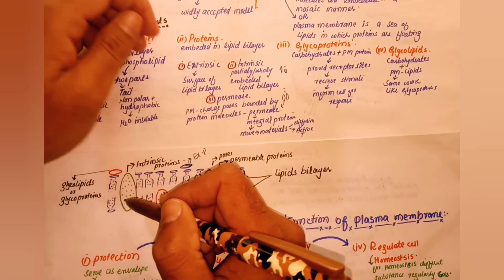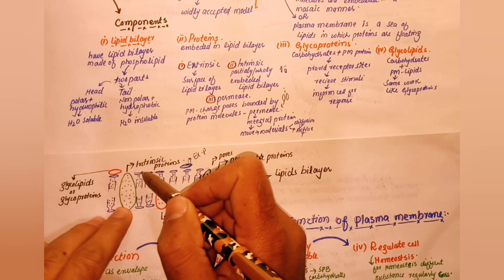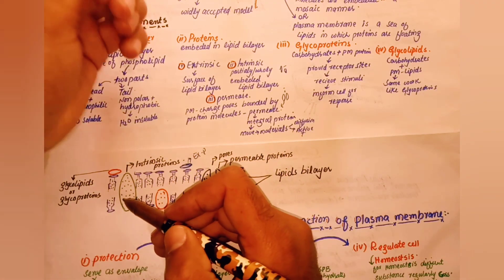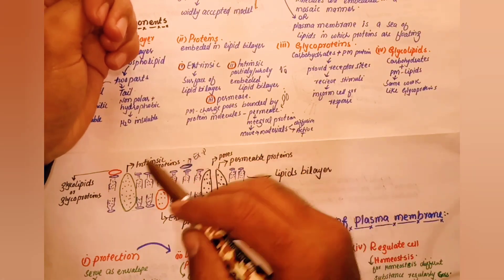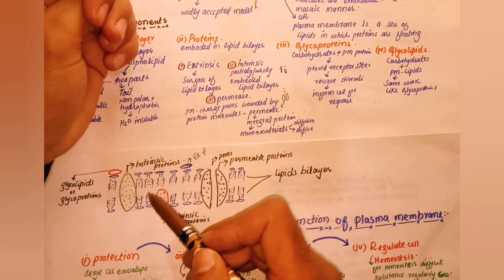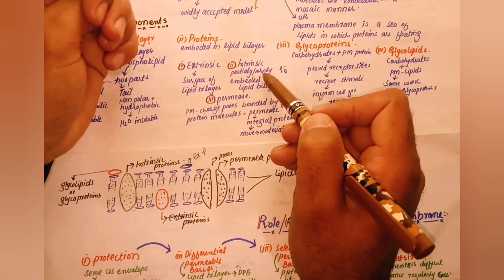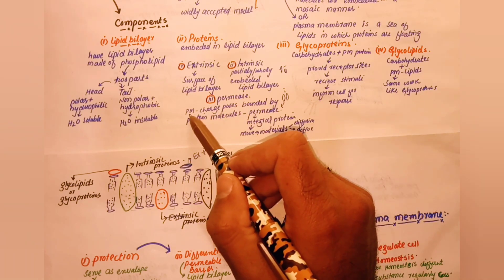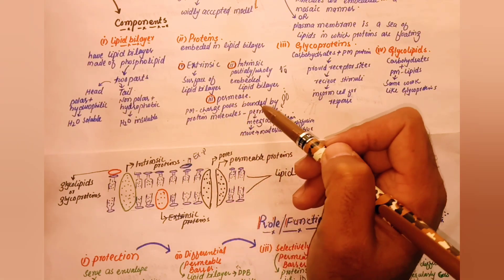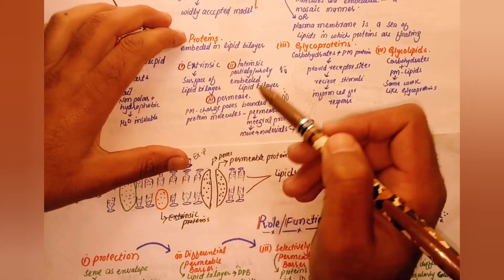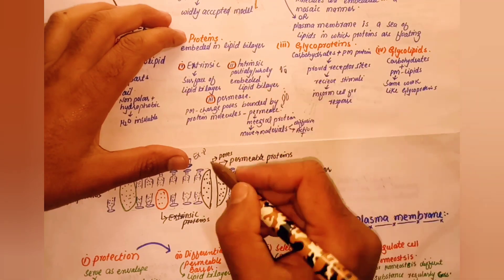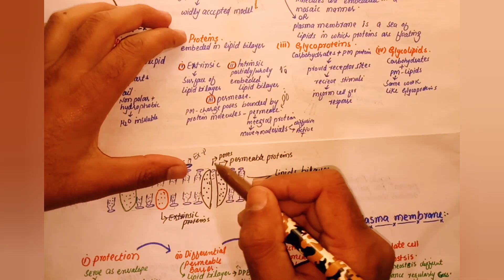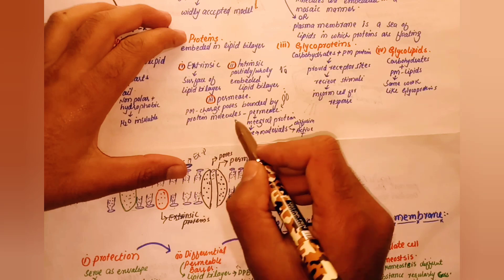The intrinsic protein can be seen in green or red color in diagrams. The plasma membrane also has charged pores that are bonded by protein molecules. These pores carry either a negative charge or a positive charge and are formed by protein molecules.